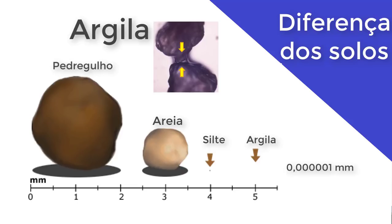Justamente por ser esse solo bem característico, a argila pode ir desde o estado líquido até o estado plástico, semissólido e sólido — ela é um dos únicos solos que passa por todos os estados. Ela tem uma alta capacidade de mudança: variando a sua umidade, é capaz de passar por todos os estados sem mudar muito as suas características químicas e físicas.